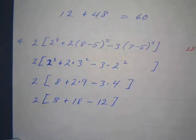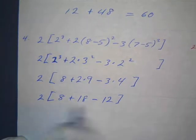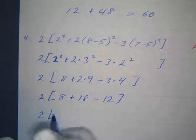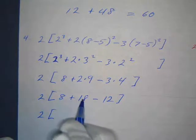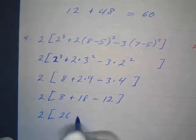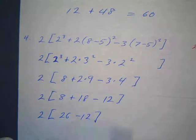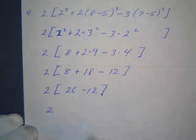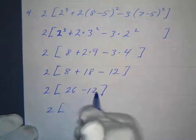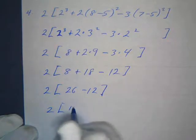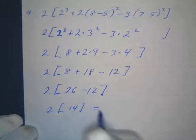And finally we're ready to add or subtract from left to right. So I've got 2 times, and what's 8 plus 18? Well that's 26, minus 12. And then I can simplify that some more, so that's going to be 2 times, and then what's 26 minus 12? Well that's going to be 14.